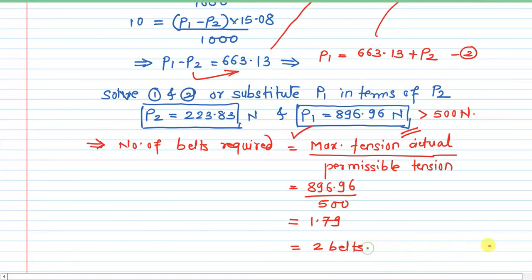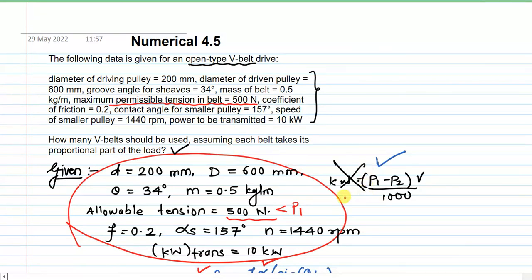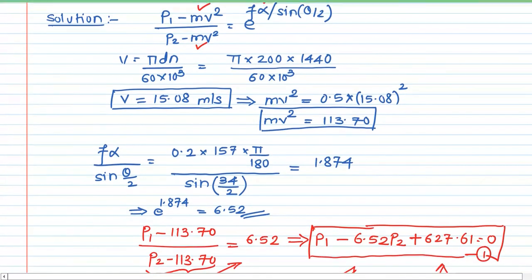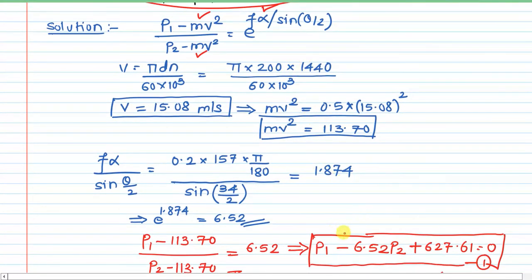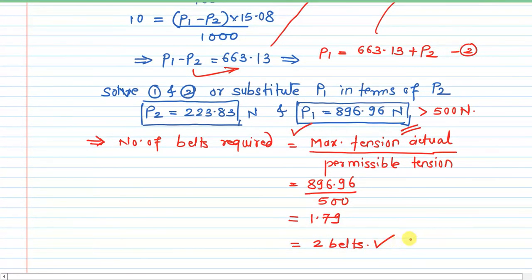The key lesson is that you cannot simply substitute the given permissible tension as P1 and solve directly — the logic of the design must be understood. We need two equations to solve for two unknowns P1 and P2, and only after finding the actual P1 can we determine how many belts are required. The final answer is 2 belts.